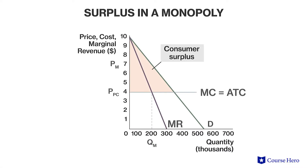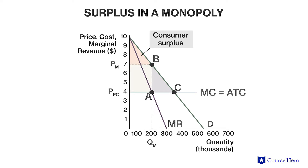When comparing a perfectly competitive market to a monopoly, a reduction in both consumer surplus and total surplus by the monopolist can be observed. Consumer surplus is still the area below the demand curve and above the market price, but the price is now the higher price set by the monopolist. As a result, consumer surplus has shrunk from being a large triangle to being a small triangle. Total surplus has also shrunk, and unlike in perfect competition, there is deadweight loss in the economy.